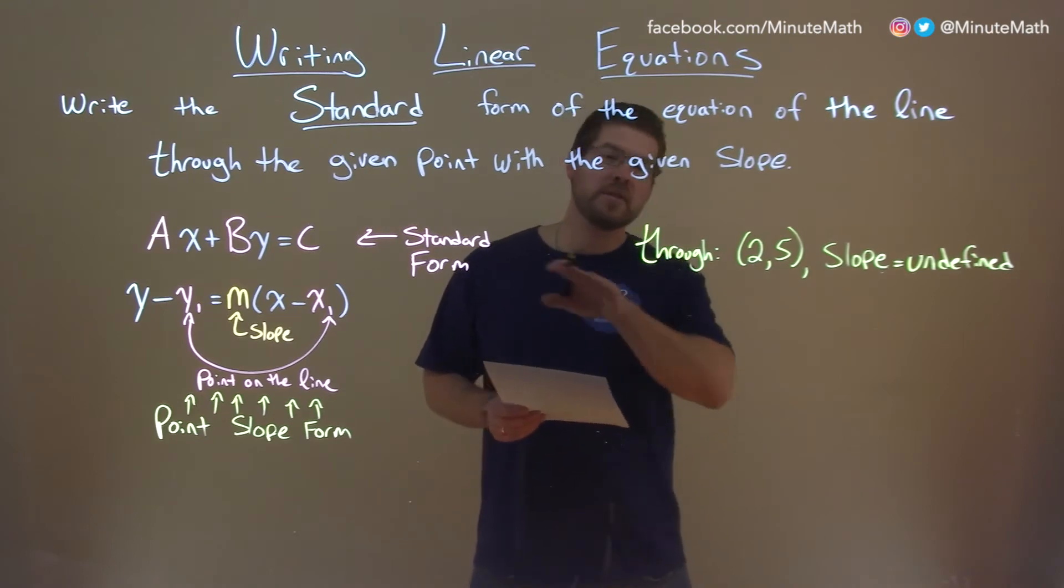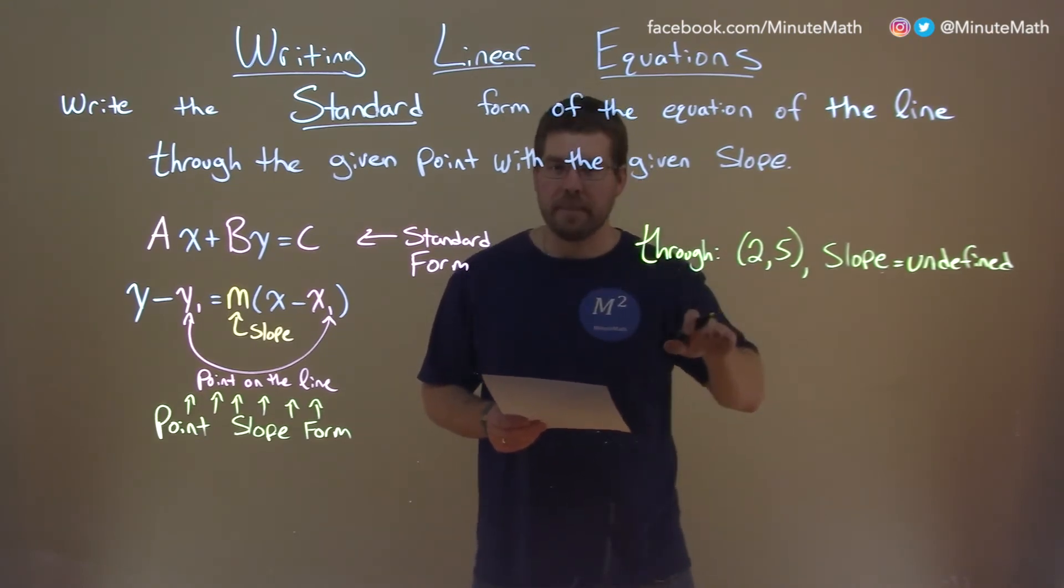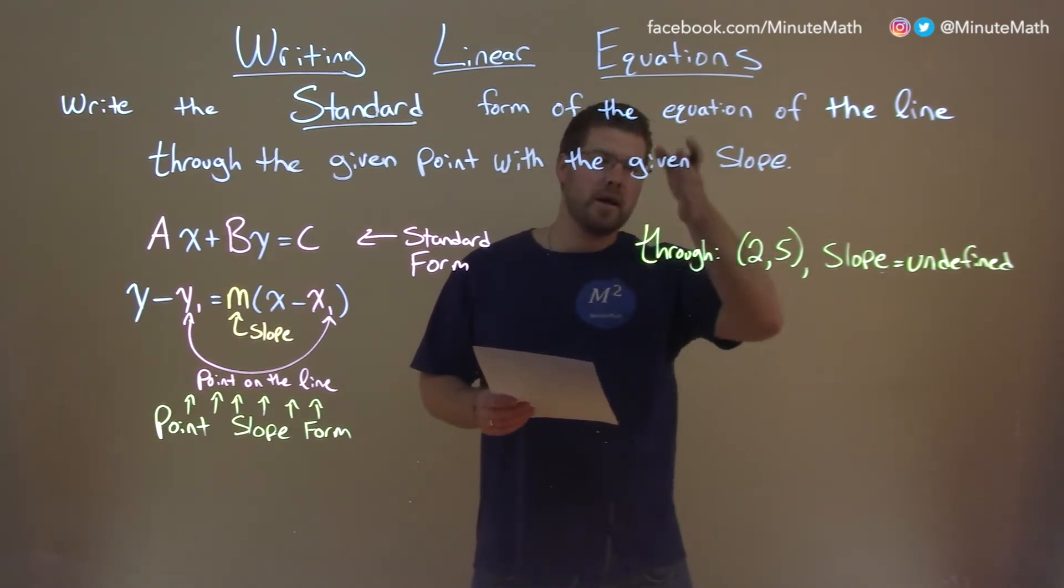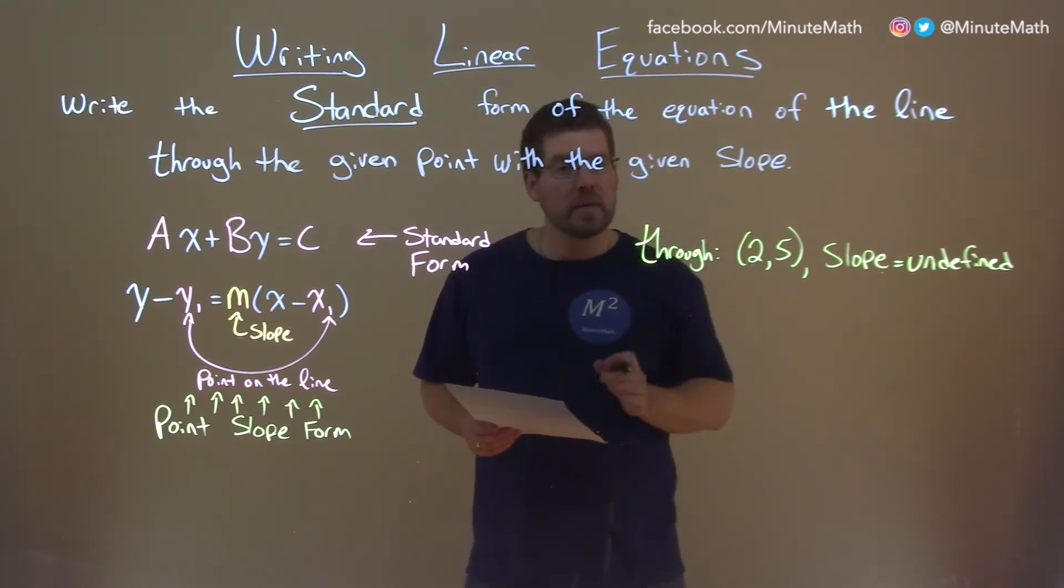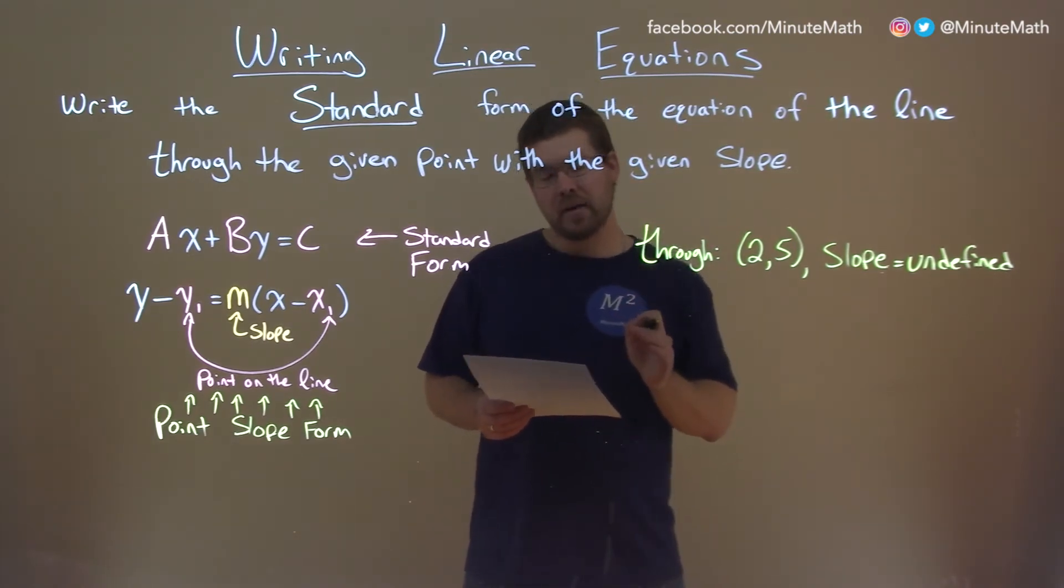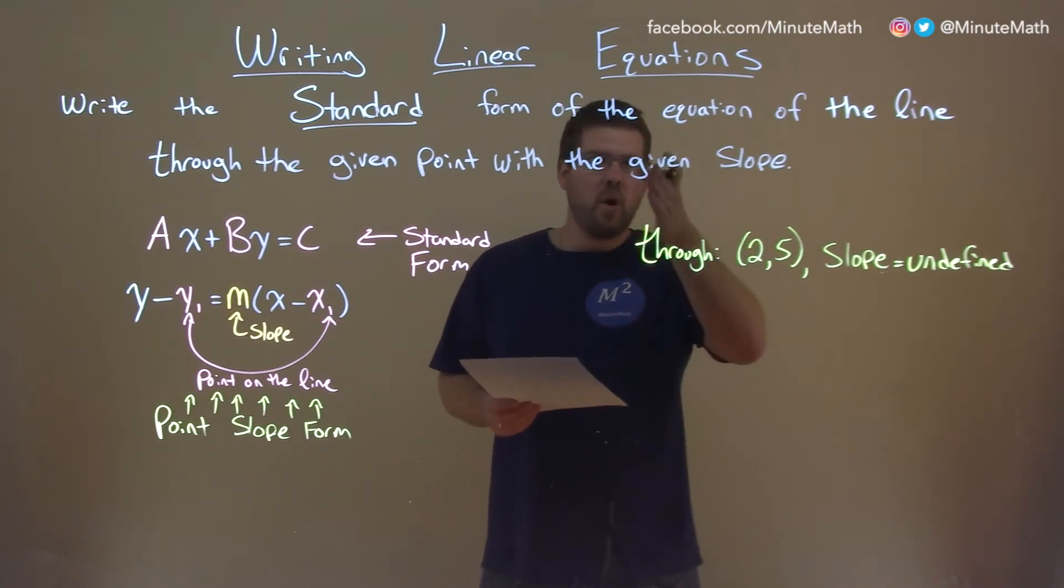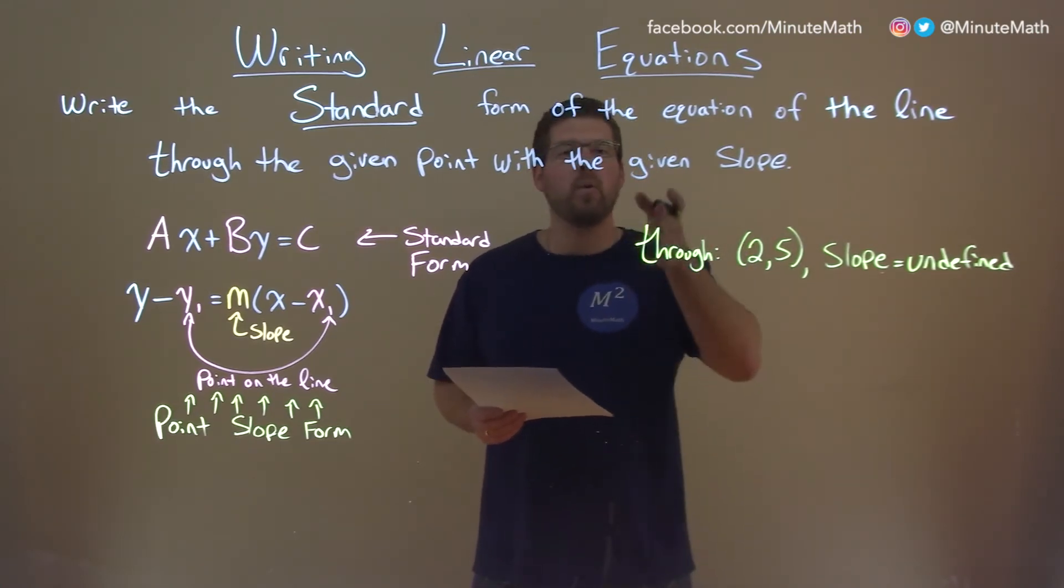That's different than a slope of zero, which is a horizontal line. So a vertical line that goes up and down only crosses the x-axis at the same value, or the same value always. The same x value the whole way through.